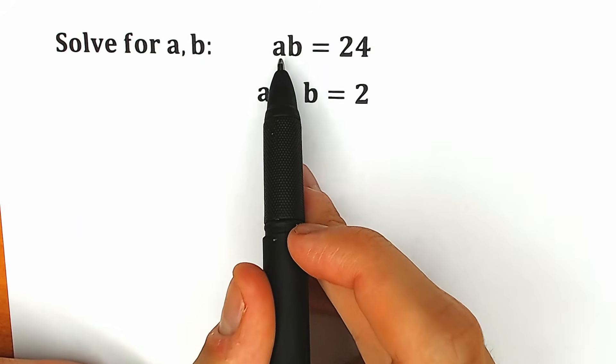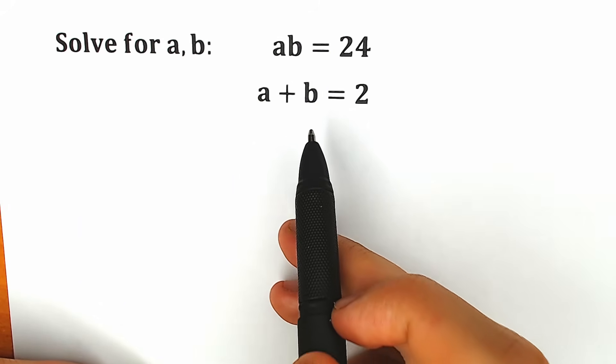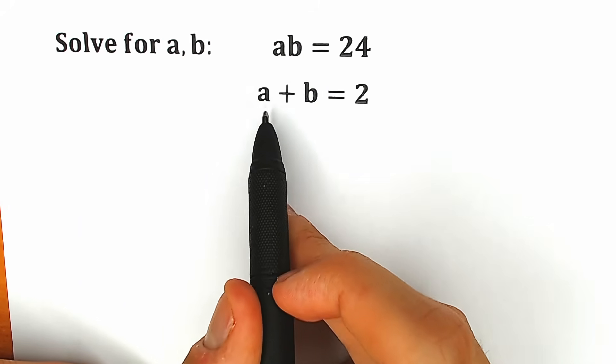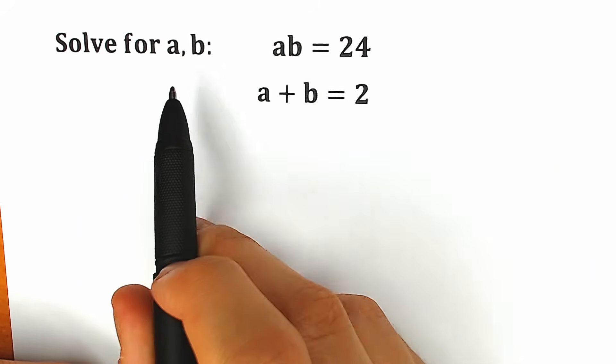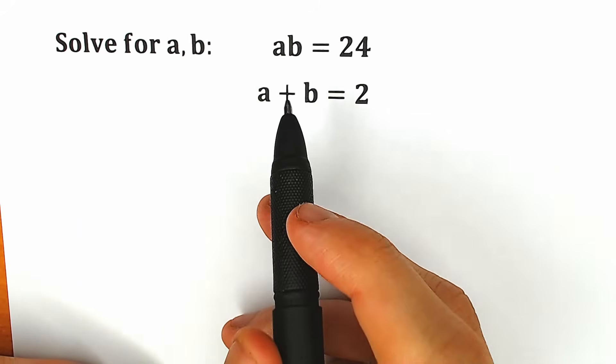We know that the product a times b equals 24, and we know that the sum a plus b equals 2, and we need to find a and b.